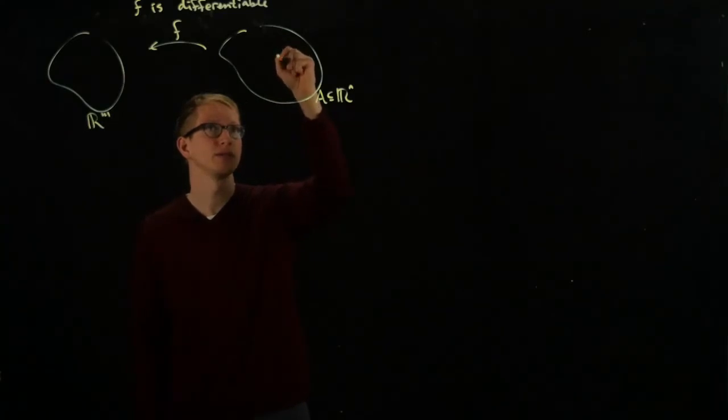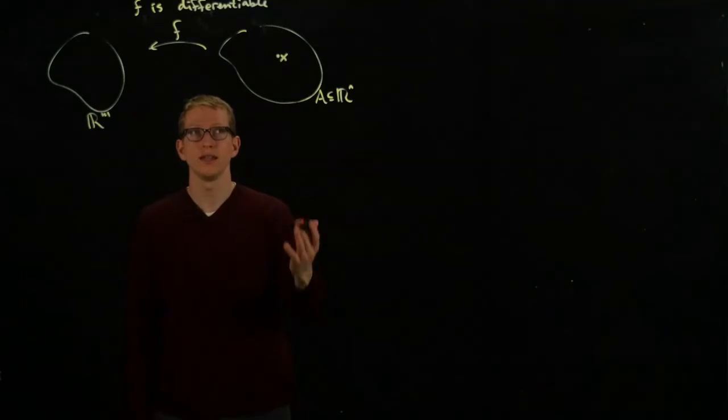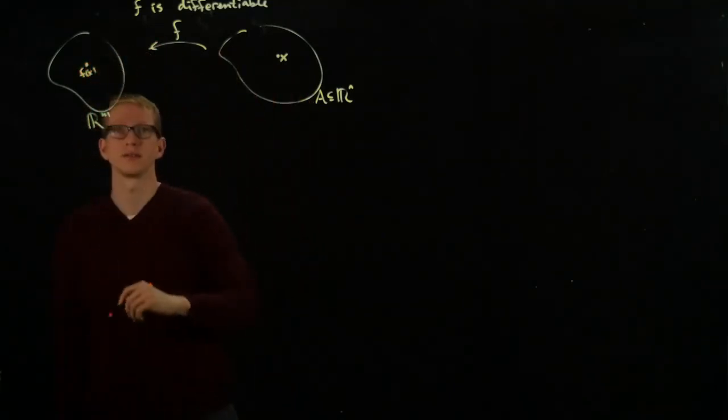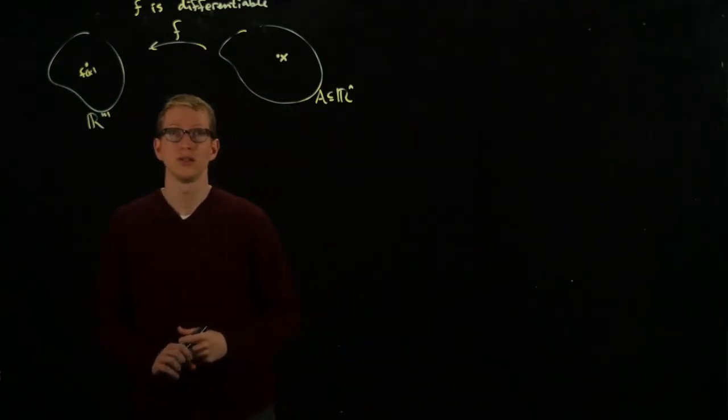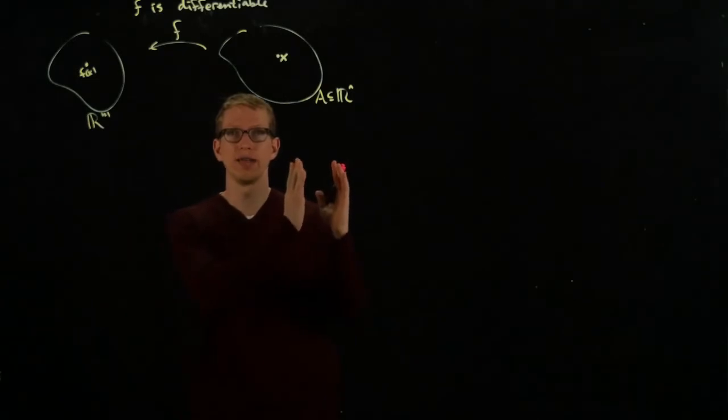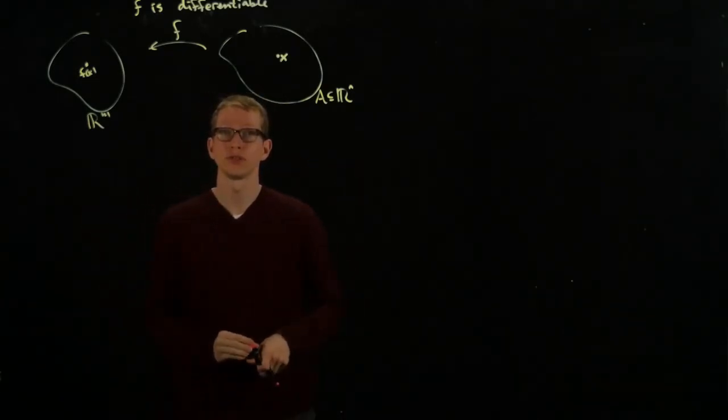So if we have some point, let's say x, in our domain, then x gets mapped to some image point, f of x. The differential at the point x gives us a linear transformation from R^n to R^m. How can we view this linear transformation?